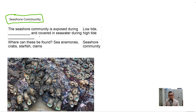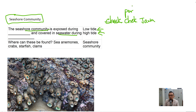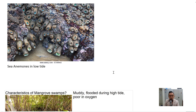The seashore community is exposed during low tide and covered in seawater during high tide. One very famous seashore community in Singapore is Chek Jawa, found in Pulau Ubin. Things found in the seashore community include sea anemones, crabs, starfish, and clams. In low tide you can see the sea anemones; in high tide, under the water, they extend their tentacles to catch small organisms to eat.